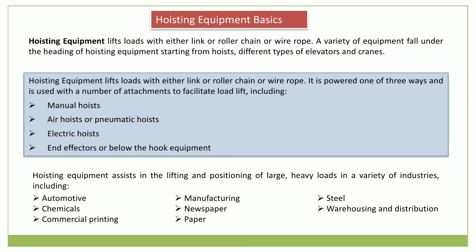The next type is the air hoist, also called a pneumatic hoist. These are powered by pneumatic driven motors. When equipped with a chain as the lifting mechanism, they are called air chain hoists. When equipped with a wire rope, this type of air hoist is often called an air wire rope hoist. These hoists are used in environments that require electric spark avoidance due to potentially explosive atmospheres. Pneumatic hoists are therefore a very delicate material handling equipment.